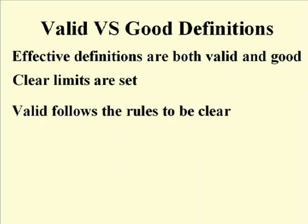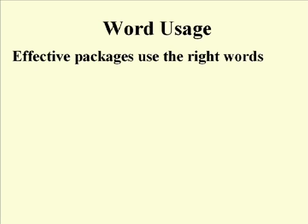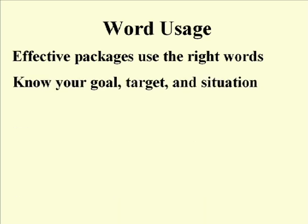Valid definitions follow four rules to help reduce ambiguity. Good definitions set the limits of the category so that everything you as a sender want to include is within those boundaries, and everything you want to exclude is kept out. There is a clear delineation between things that belong and things that don't, so that as you pass that package on to your target, they will see it the way you do. Word usage is at the heart of good definitions, good packages, and all communication. The effective package uses the right words — those that are appropriate and that the target will understand in the way you wish them to. You need to know your goal, target, and situation in order to select the correct words.